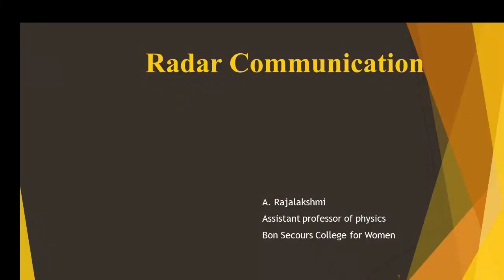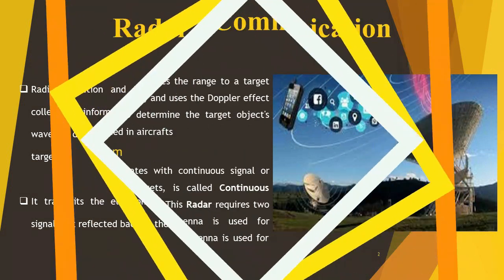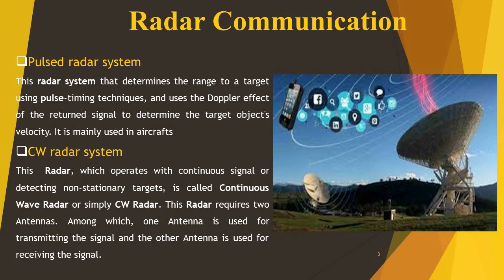I am going to discuss radar communication. Radar is radio detection and ranging that uses electromagnetic waves to determine the range, angle, or velocity of objects. There are two types of radar communication: pulse radar system and CW radar system.